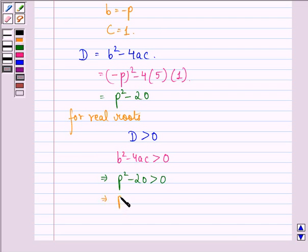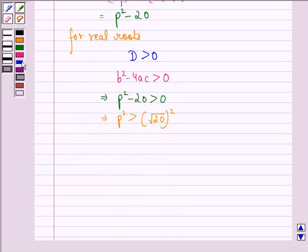This implies p² > (√20)². And this implies that p should be greater than √20 or p should be greater than -√20.